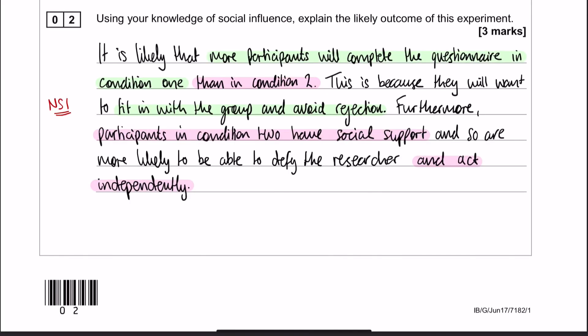So we're going to identify that more participants are going to complete the questionnaire in condition one than in condition two. And the reason for that is because they're going to want to fit in with the group and avoid rejection, which is normative social influence.